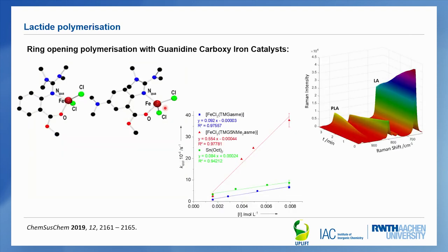We worked further over the years and came to iron complexes — the same ligand: guanidine group, ester group, iron center, aromatic ring, with some decoration such as a dimethylamine group. Using in-situ Raman spectroscopy, we can follow the Raman peak of lactide decreasing and the PLA peak increasing, derive kinetics, and compare these kinetics between the traditional catalysts and our new catalysts. In green is tin octanoate, in blue is the simpler system, and in red is the best system with the dimethylamine group — and we are finally beating tin octanoate with an industrially usable catalyst that is faster.